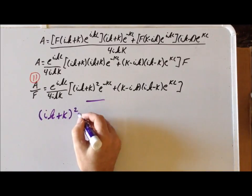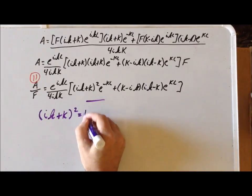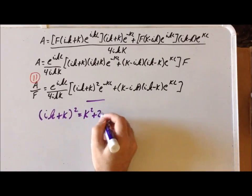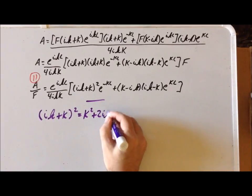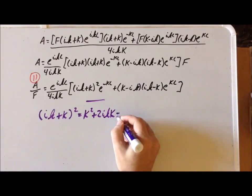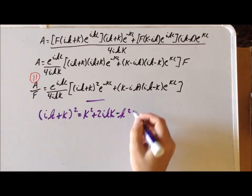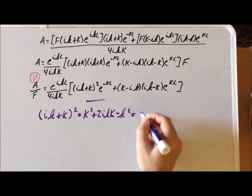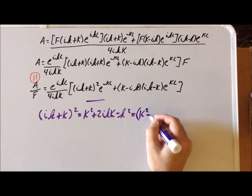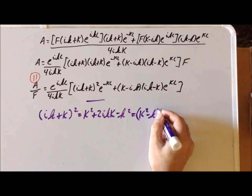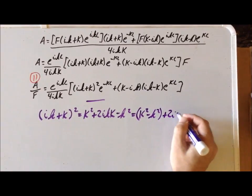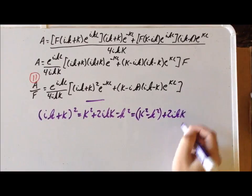So we take this and square it. We get big K squared plus 2i small k big K minus k squared. The important result is that we can rewrite this as big K squared minus small k squared plus 2i small k big K.